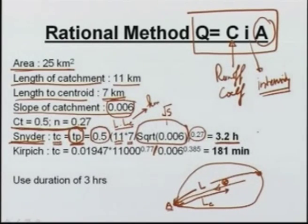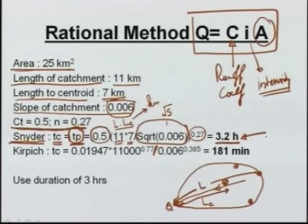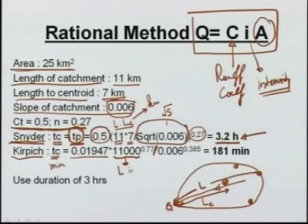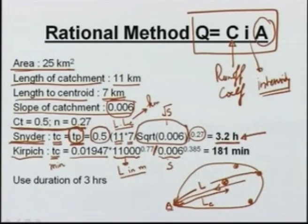There is another commonly used equation known as the Kirpich equation, which gives T_c in minutes as 0.01947 × L^0.77 / S^0.385, where L is in meters. Putting in the values of L and S gives 181 minutes. Comparing the two equations, they are not very different, so to be on the conservative side we take the smaller T_c and therefore use a duration of 3 hours.